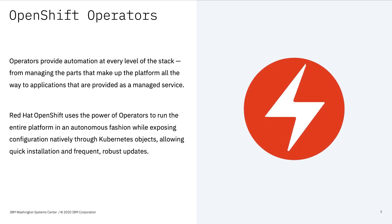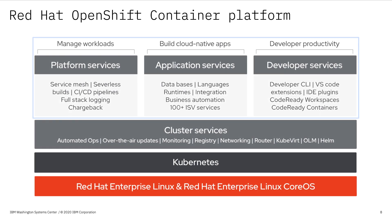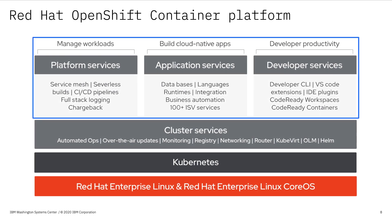Automated operations, or operators, are essentially a custom type of Kubernetes controller. They run continuously and automate the installation, update, and lifecycle management of containerized applications. There are operators for all types of different things — from Red Hat applications to third-party solutions to open source projects. At the very top of the stack, we have the application level: software, middleware, developer tools, and all the things you want OpenShift to actually run.